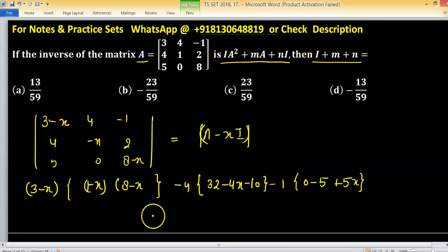This is our characteristic polynomial. Now, after further simplifying, we have minus x cube plus 12x square minus 24x minus 59 equals 0.